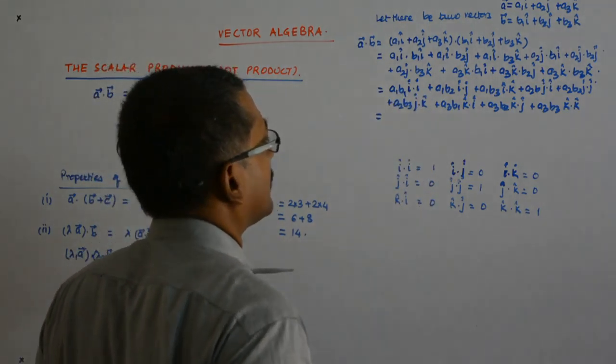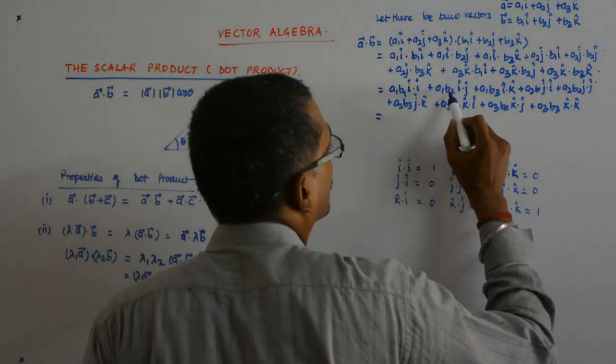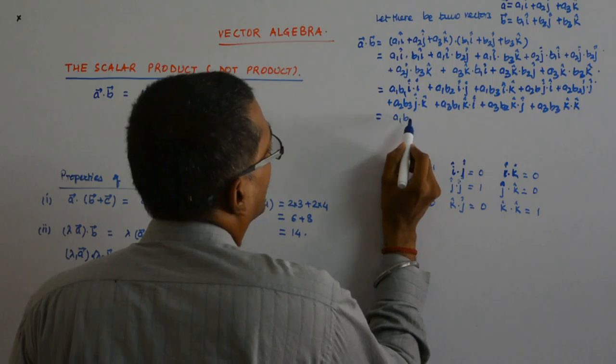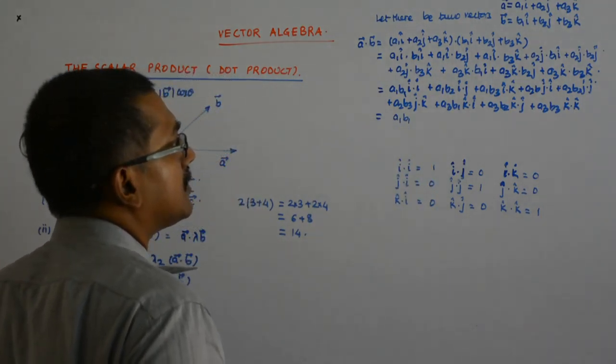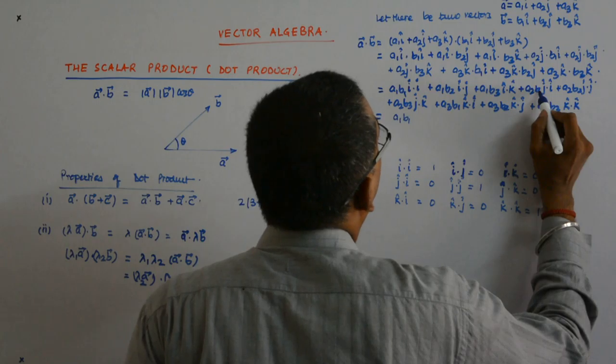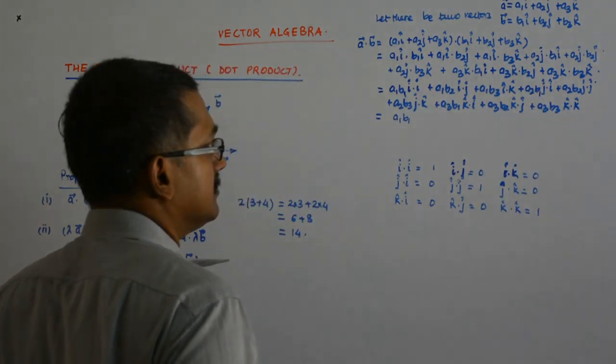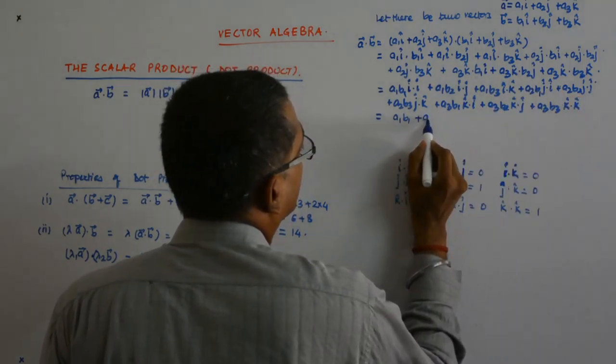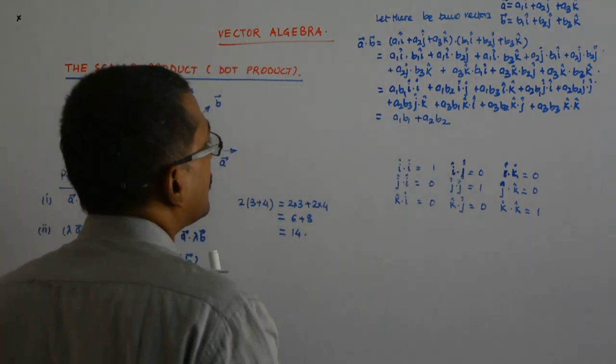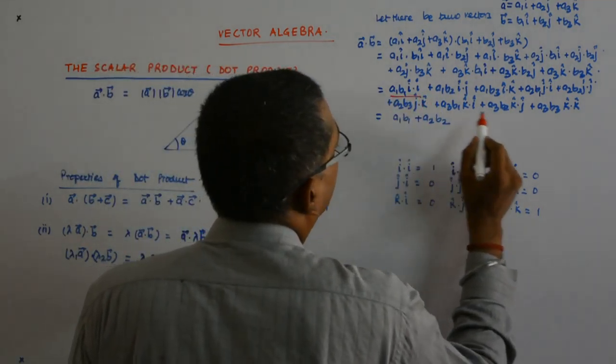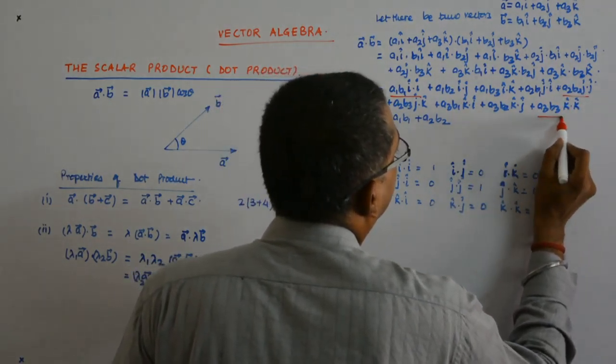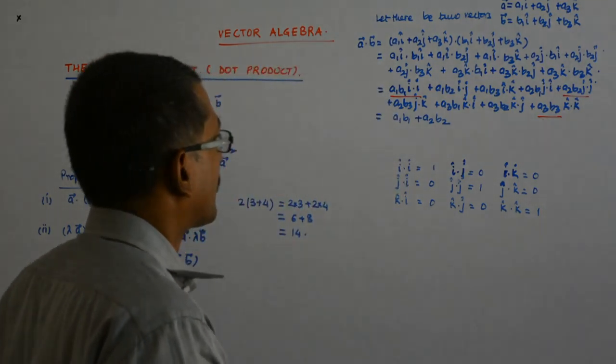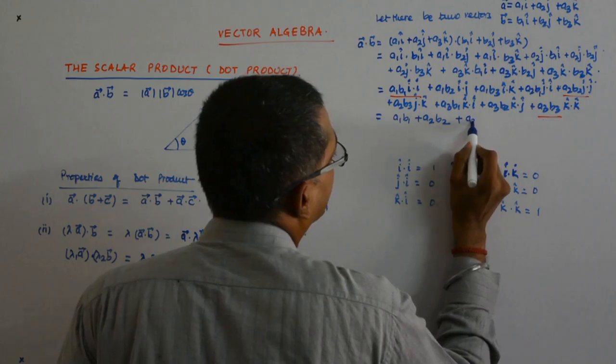So, i cap dot i cap is 1. And this goes to 0 and this goes to 0. Why? i dot j is 0 and i dot k is 0. So, I'm left with a1 b1. Then, a2 b1, that also goes to 0, j dot i. a2 b2 remains. So, I'll mark it by red. And this term remains, this term remains, and this term remains. Rest all go to 0. So, a1 b1 plus a2 b2 plus a3 b3.